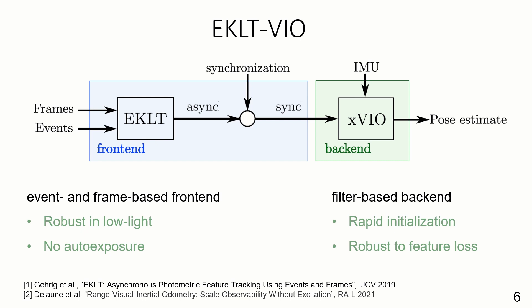Our proposed method, EKL-TVIO, combines the advantages of a state-of-the-art event and frame-based front-end with a filter-based back-end, X-VIO, which is optimized for helicopter flight. The front-end takes in synchronous images which are used to detect features and events which it uses to track these features asynchronously. The resulting feature tracks are then fused with IMU measurements in X-VIO to compute the camera pose. By combining the advantages of EKL-T and X-VIO, EKL-TVIO is robust in low light and rapidly changing lighting conditions, while being able to handle rapid initialization at takeoff and is highly robust to sudden feature loss during flight anomalies.